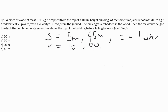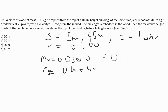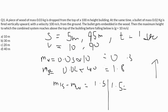Using conservation of momentum at the point of impact: momentum of wooden block is 0.03 times 10 equals 0.3 kg·m/s downward, and momentum of bullet is 0.02 times 90 equals 1.8 kg·m/s upward. Net momentum is 1.8 minus 0.3 equals 1.5 kg·m/s upward. So 1.5 equals total mass 0.05 times velocity, giving combined velocity equals 30 meters per second upward.